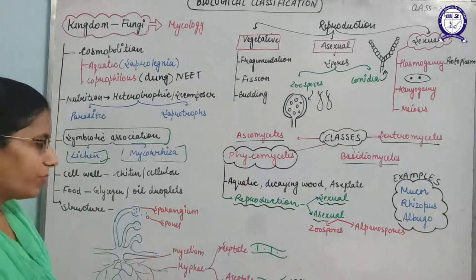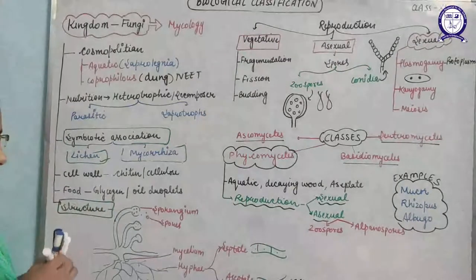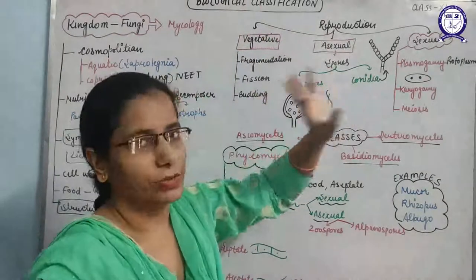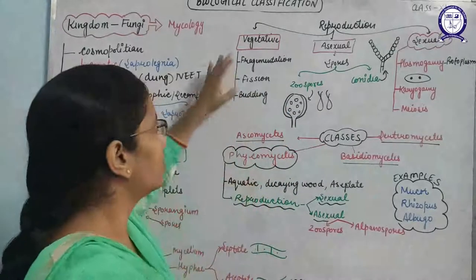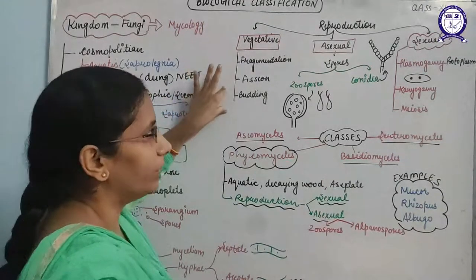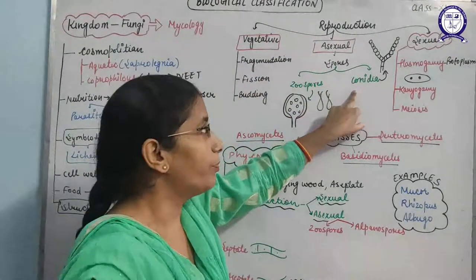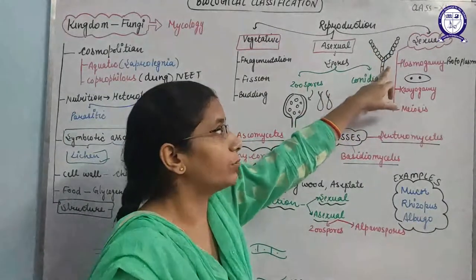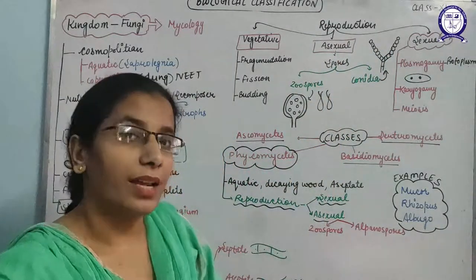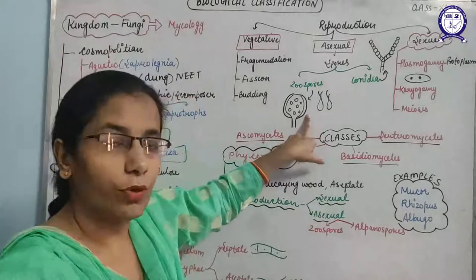Now we will discuss what type of reproduction is followed by fungus: vegetative, asexual, and sexual — three types. Vegetative reproduction occurs by fragmentation, fission, and budding. Asexual reproduction takes place with the help of spore formation. These spores may be conidia — which arise on conidiophores — structures where conidia or spores arise.